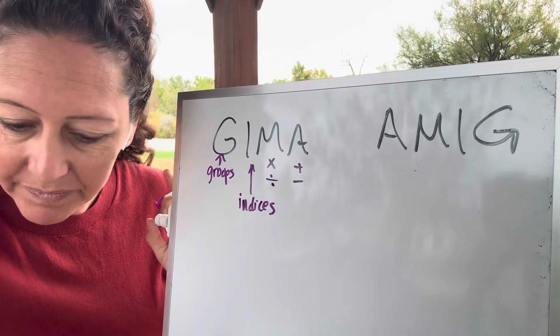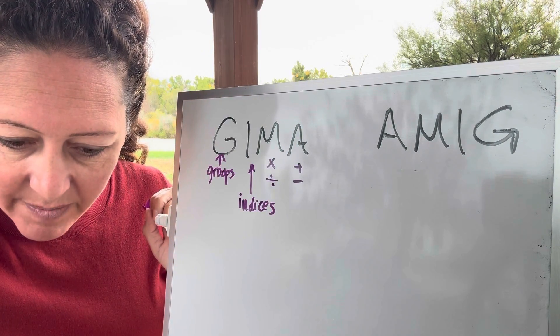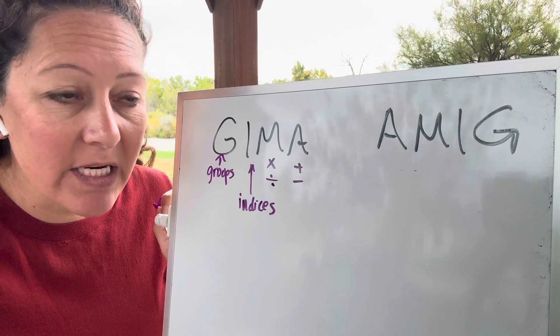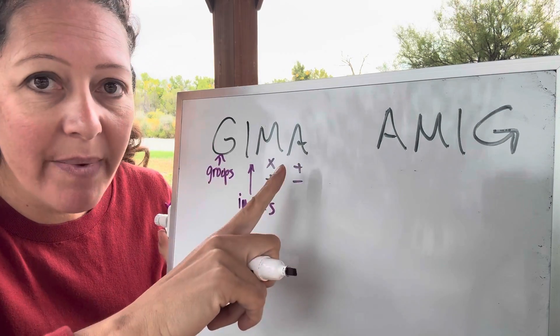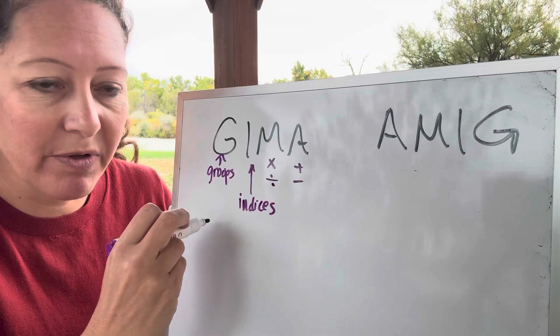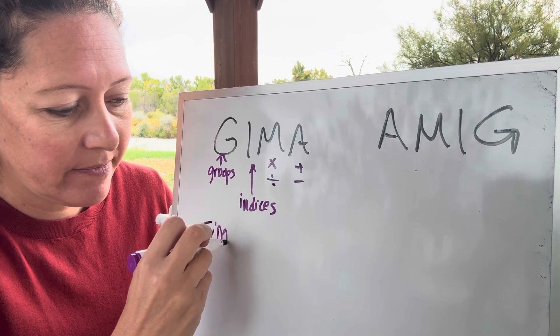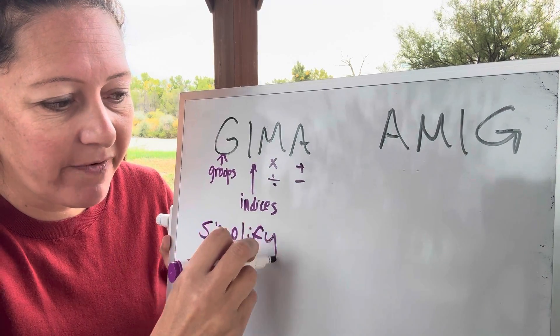So GIMA, and I mentioned, okay, I mentioned this in my definition, define. GIMA is used to simplify expressions.